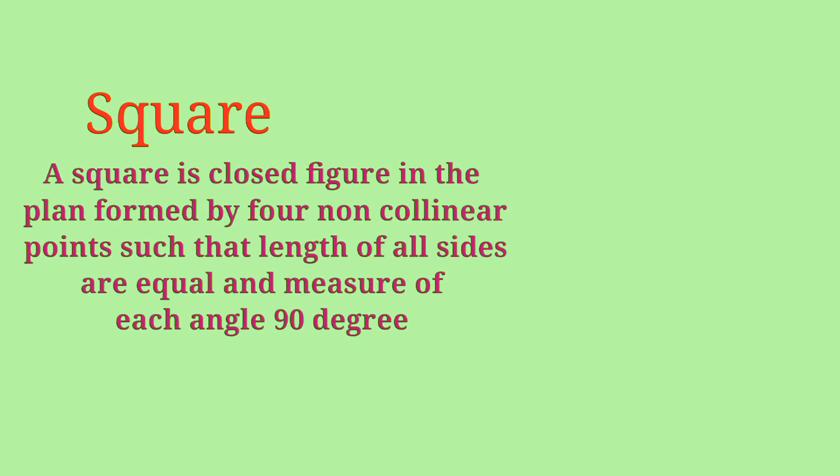The next definition is square. A square is a closed figure in the plane formed by four non-collinear points such that the length of all sides are equal and the measure of each angle is 90 degrees.